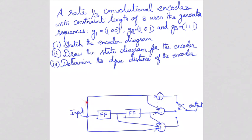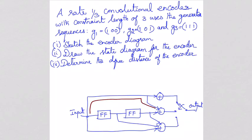The first output is connected with only 1 connection. Next, G2 = 1, 0, 1 describes the connection between the input and the second adder. The first connection is active, the second connection is 0, and the third connection is active — so 2 inputs go to the second adder. G2 describes the connection between the input and the second output.